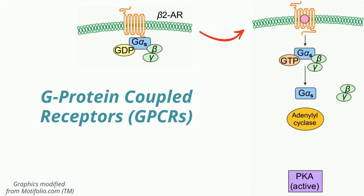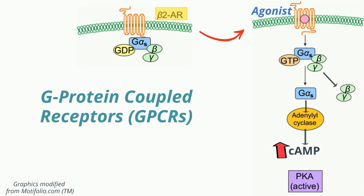Here we show the prototypical adenylate cyclase-linked signaling of, for example, the beta adrenergic receptors. Following binding by a receptor agonist, the G alpha S — that is G stimulatory — subunit protein engages the adenylate cyclase enzyme, which increases intracellular cyclic AMP, leading to phosphorylation and activation of protein kinase A, leading to a cellular response.